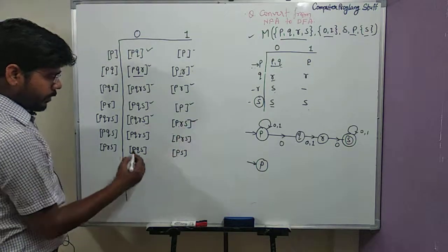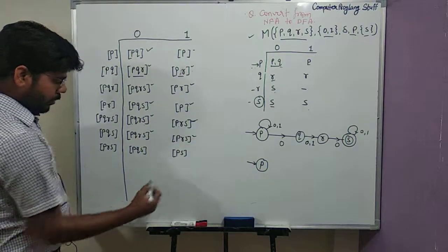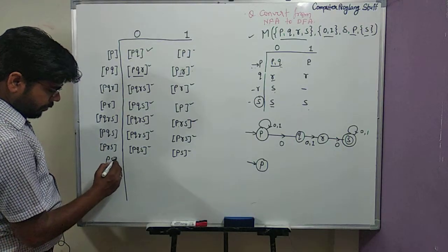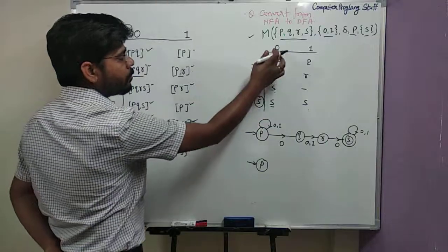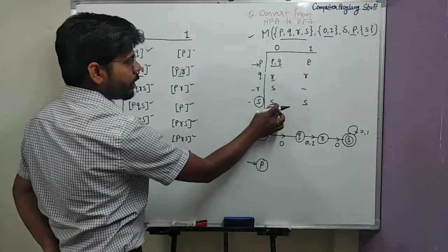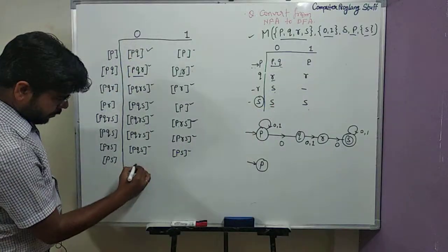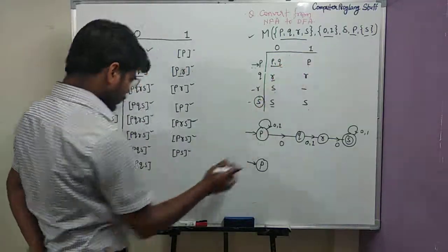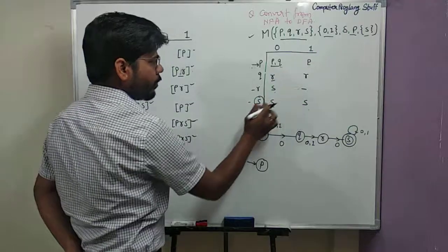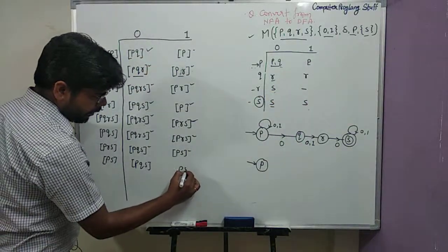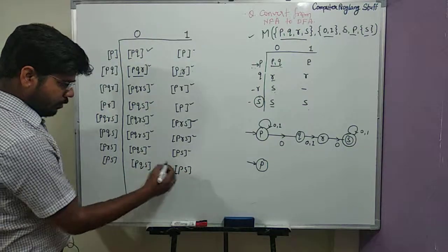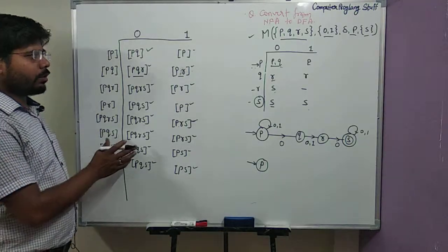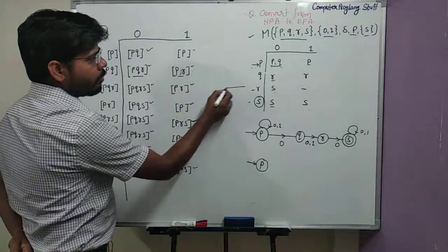State P,Q,S is also complete. Now we process state P,S. For input 0 from P,S: from P we get P,Q and from S we get S, so we have P,Q,S. For input 1 from P,S: from P on input 1 we have P, and from S on input 1 we have S, so we get P,S. No new states are generated, meaning the DFA is now complete.